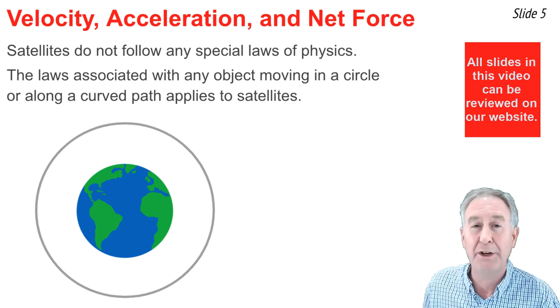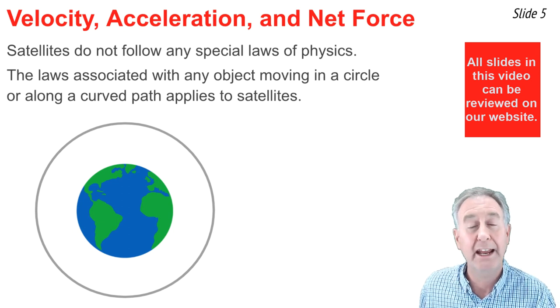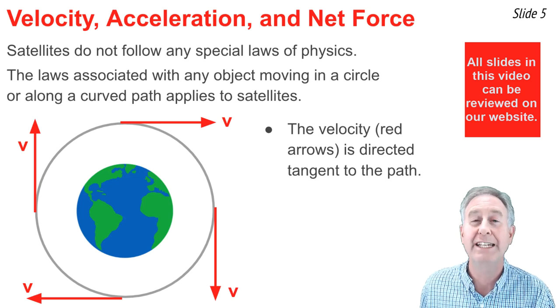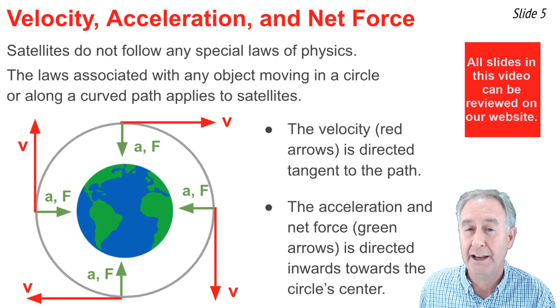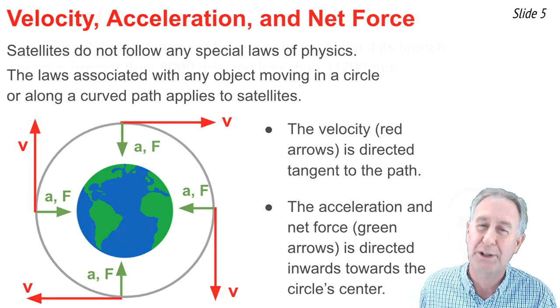Here is a diagram of an Earth-orbiting satellite orbiting in a circular path. And at every location along the circle, the direction of the velocity vector is directed tangent to the circle. And the direction of the acceleration and net force vectors are perpendicular to the path and directed towards the center of the Earth.